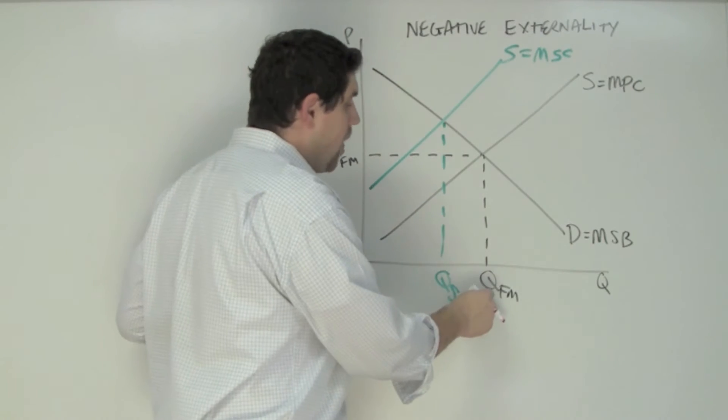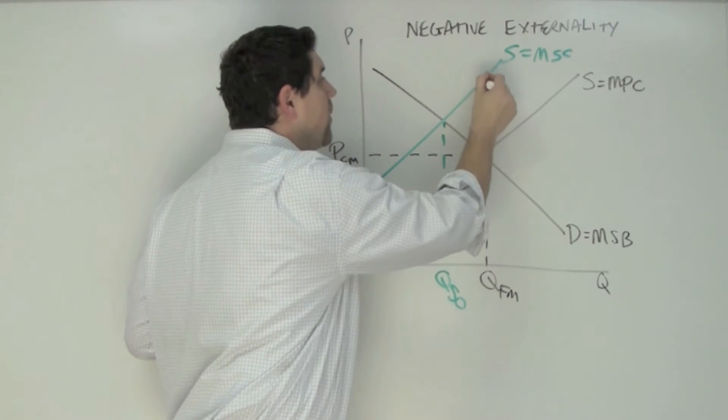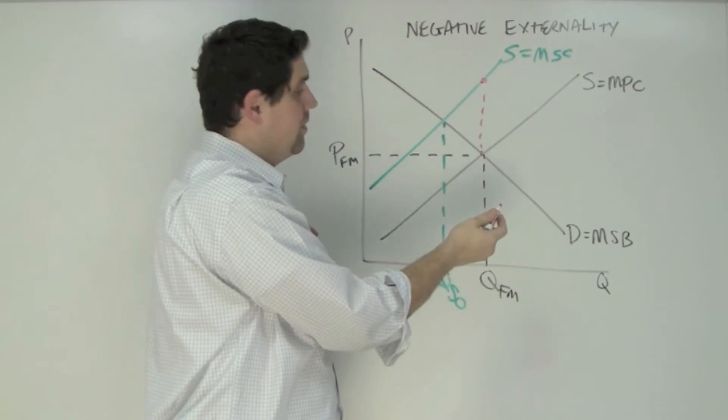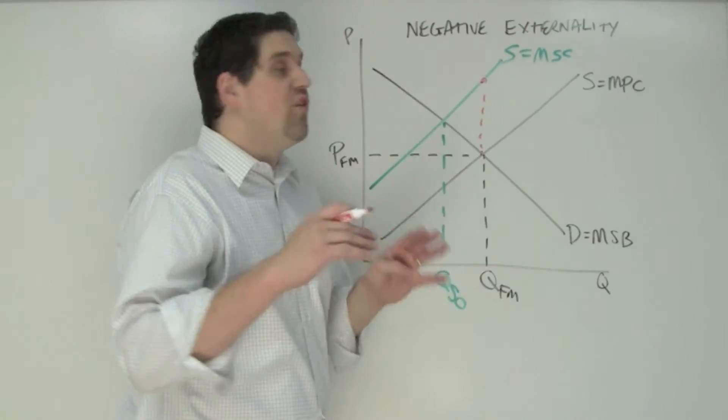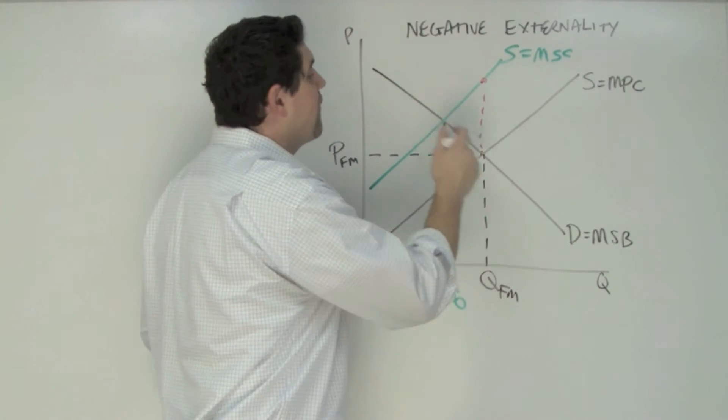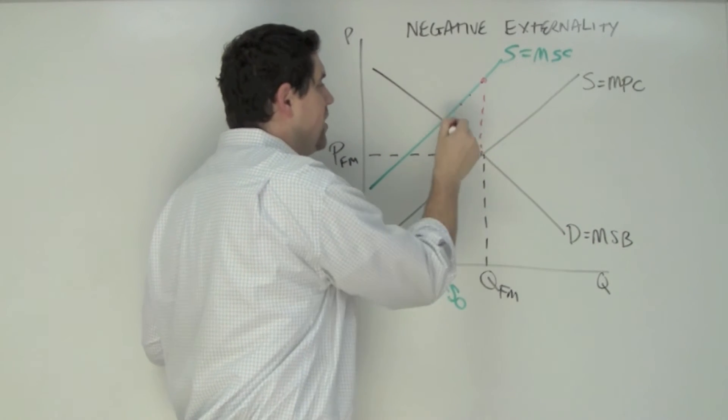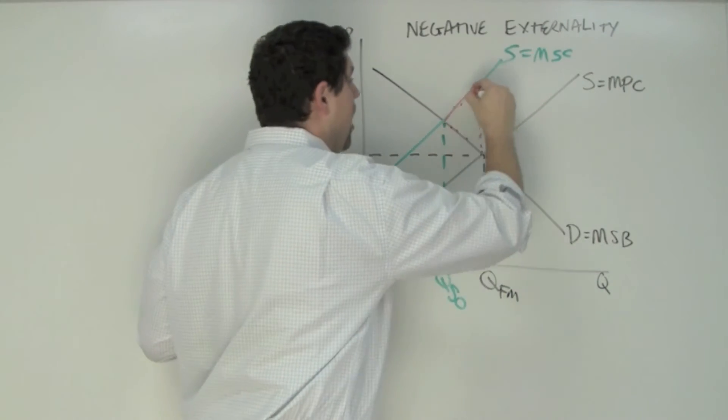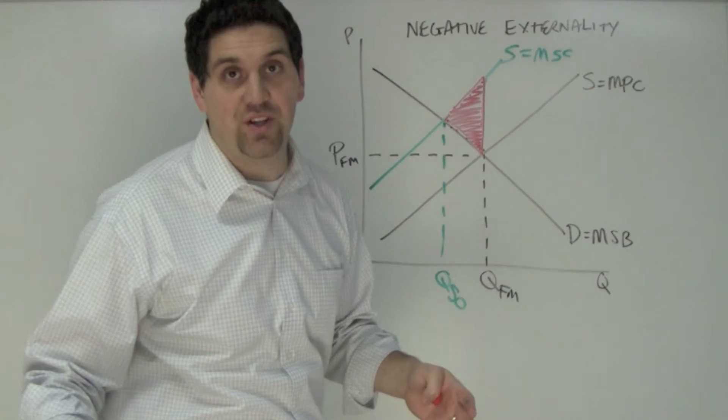When the free market produces this quantity, they're producing units where the marginal social cost is greater than the marginal social benefit to society. That's why this is a market failure. When you factor in these external costs, the free market should never produce any of these units because the marginal social cost is greater than the marginal social benefit. The end result is deadweight loss. That's the answer to the question.